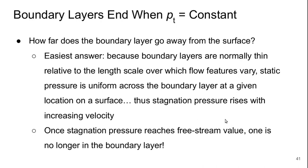The static pressure is uniform across the boundary layer at a given location on its surface, and therefore the stagnation pressure rises with increasing velocity. So once the stagnation pressure reaches the free stream value and stops changing, then you're no longer in the boundary layer.